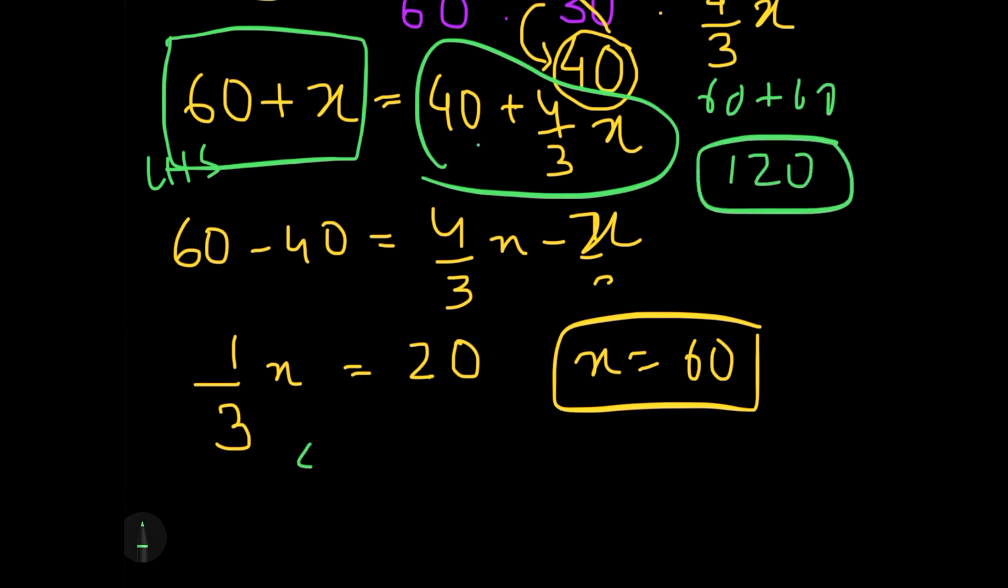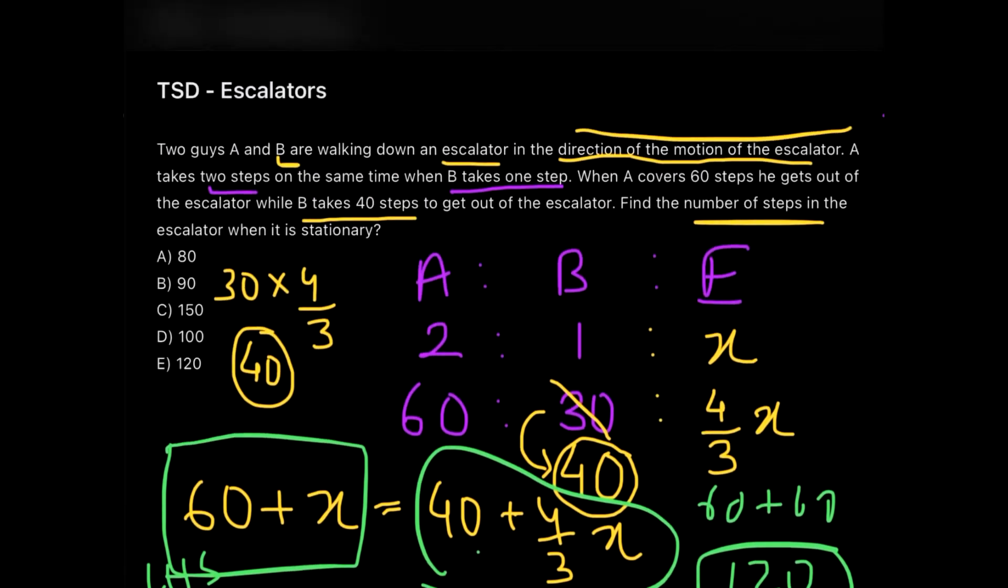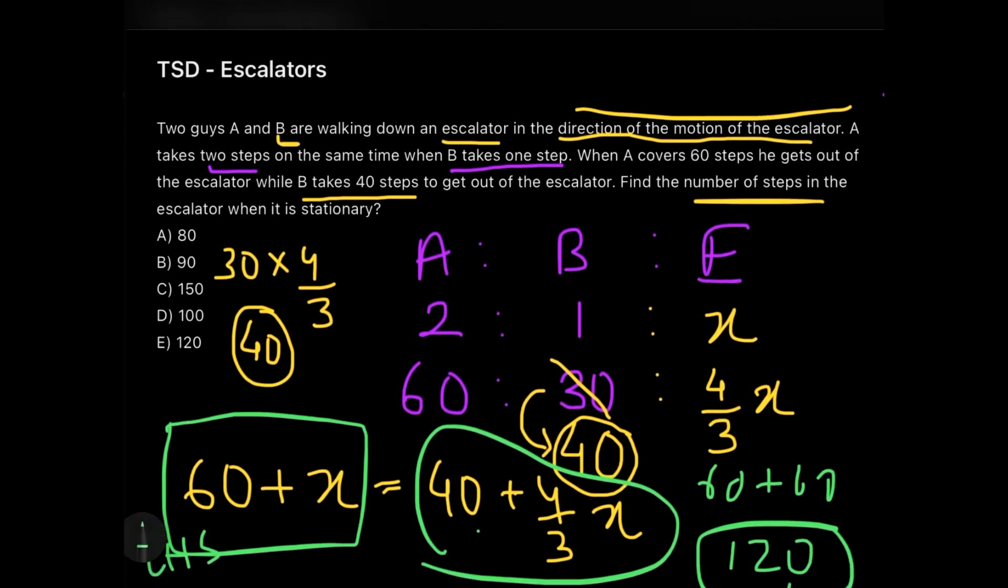So if you put the value of 60 in the LHS, then you get the answer as 60 plus 60, which will give you 120 steps. And if you check it in the right side also, you will find that 40 plus 4/3 of 60 will give you nothing but 80 plus 40, which is 120 back. So the number of steps over here would become 120, and if we go back and check the options, we could see that option E would be our correct answer.